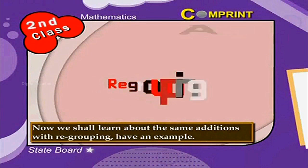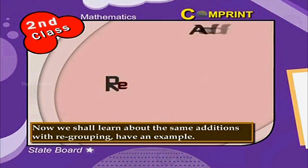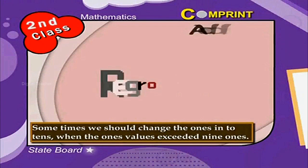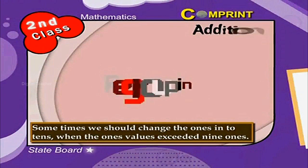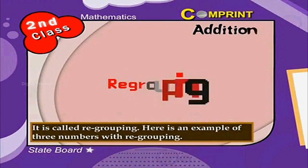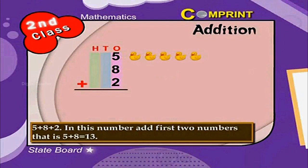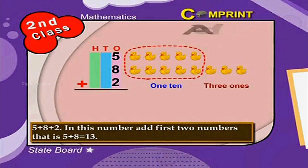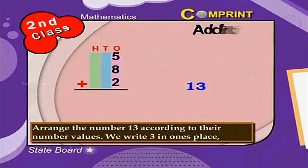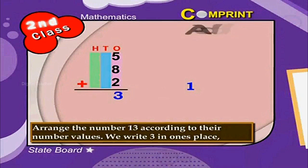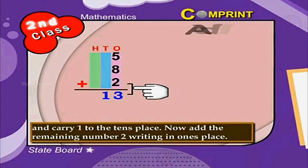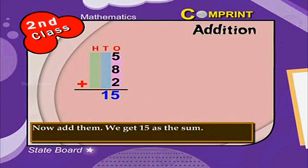Now we shall learn about additions with regrouping. Sometimes we should change the ones into tens when the ones values exceed 9 ones — this is called regrouping. Here is an example with 3 numbers and regrouping: 5 plus 8 plus 2. Add the first two numbers: 5 plus 8 is equal to 13. Arrange 13 according to number values — write 3 in ones place and carry 1 to the tens place. Now add the remaining number 2 in ones place. We get 15 as the sum.